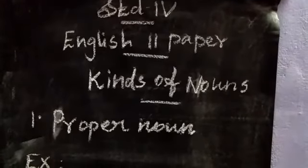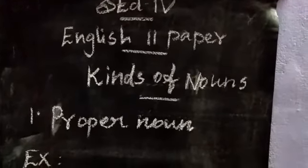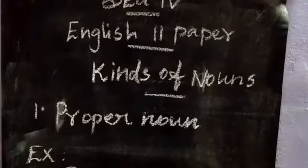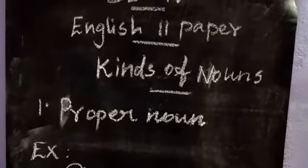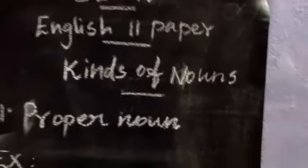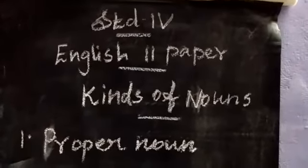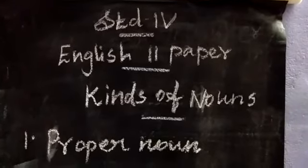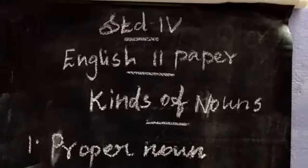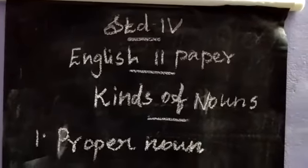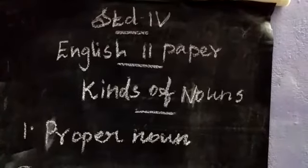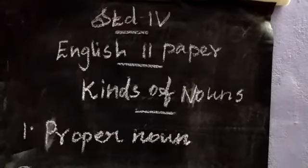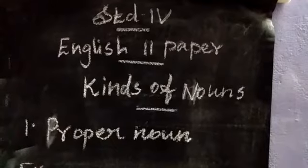How many kinds of nouns? There are 4 kinds of nouns. What are they? They are proper noun, common noun, collective noun and abstract noun. Once more: proper noun, common noun, collective noun, abstract noun — 4 kinds of nouns.